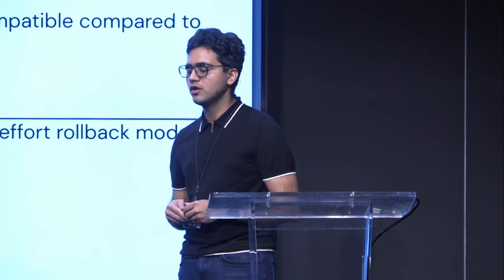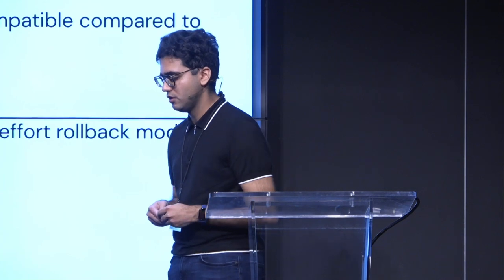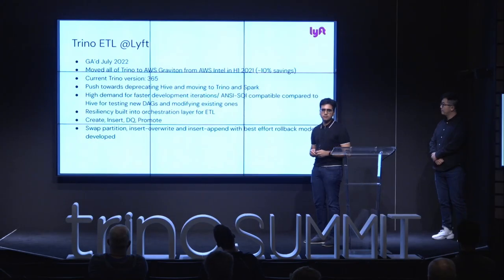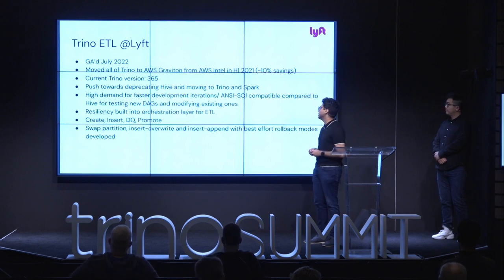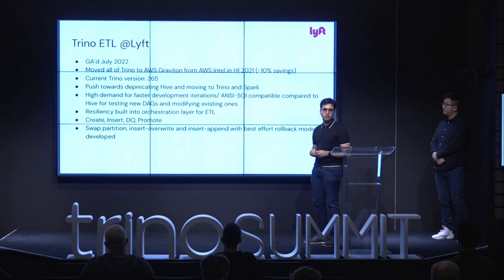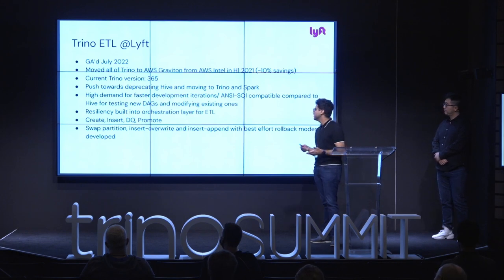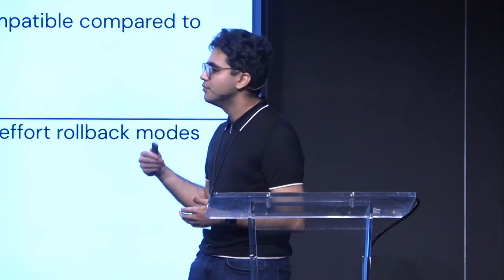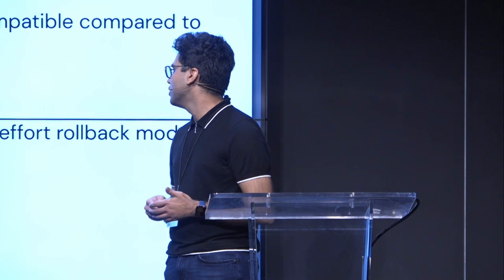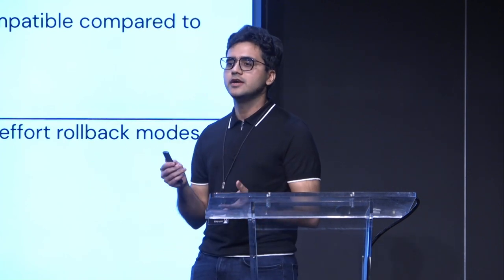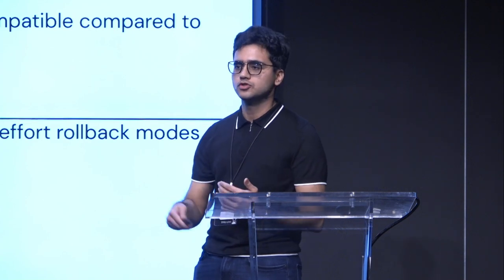During 2019 and 2020, we did not have fault-tolerant execution, so we built resiliency at the orchestration layer. We have two orchestration systems — Airflow and Flight. A typical ETL is simply create, insert, dequeue, and promote. Within Airflow, we created a Presto operator with different modes for users: swap partitions, insert overwrite, or insert append with best-effort rollback. We created that custom code at the orchestration layer for our users to try out Trino ETL.